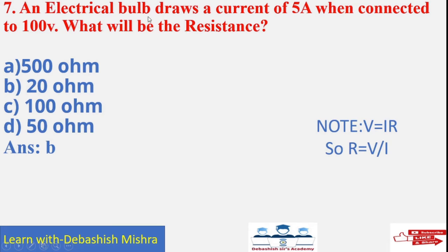An electric bulb draws a current of 5 ampere when connected to 100 volt. What will be the resistance? What is given? Given I is given, V is given. We have to calculate the R. We know that V is equals to IR. R is equals to V by I. V is your 100. I is 5. So, answer is 20. Answer B is the correct answer.